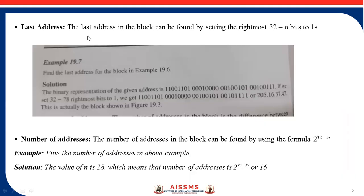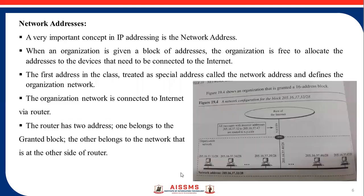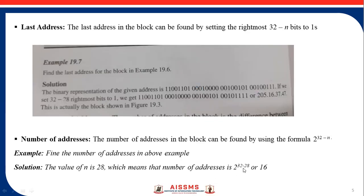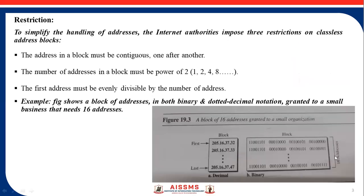Similarly, the last address in the block can be found by setting the 32-n right-most bits in the binary notation of the address to 1s. With n equal to 28, we set 32-28 = 4 right-most bits to 1 to obtain the last address. The number of addresses in the block can be found using the formula 2 raised to power (32 minus n). With n equal to 28, this gives 2 raised to power 4, which equals 16 addresses total.